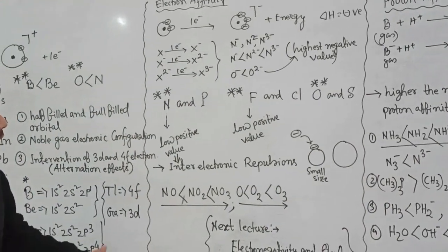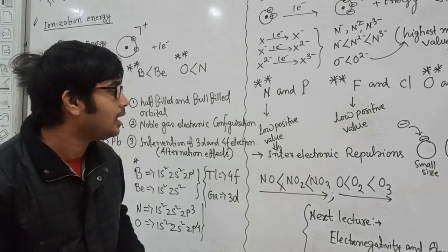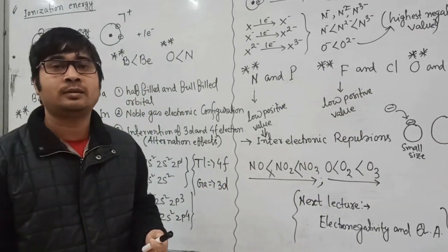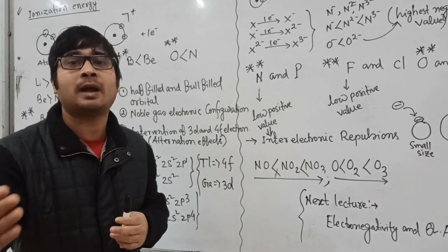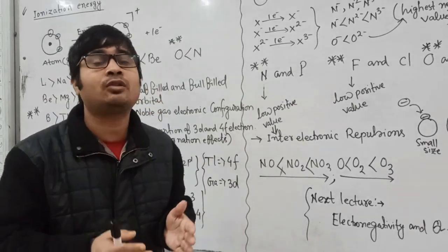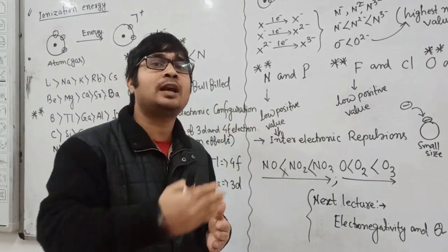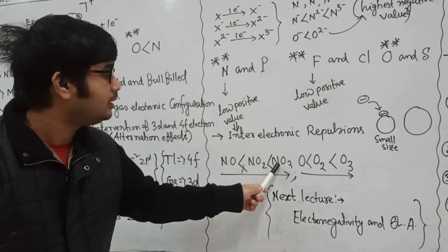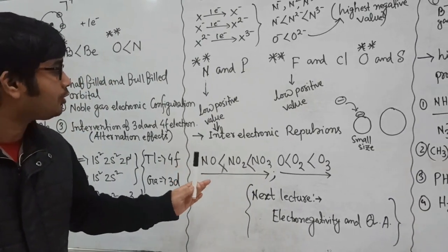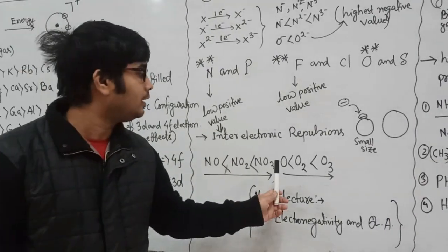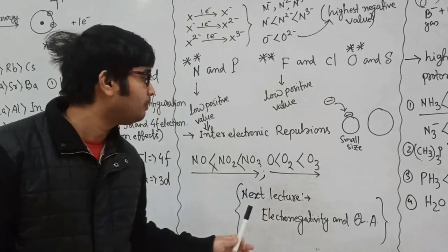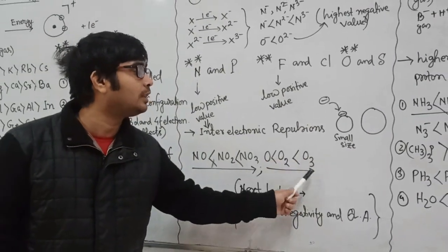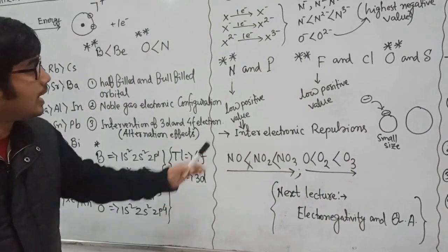How can we explain the trend of electron affinity of molecules like NO, NO₂, and NO₃? You need to remember that the higher the number of electronegative atoms, the higher will be the electron affinity, because it is easier for the molecule to take the electron and stabilize it. Among NO, NO₂, and NO₃, the electron affinity is highest for NO₃. Similarly, comparing oxygen atom, O₂ molecule, and ozone, ozone will have the maximum electron affinity because it has three electronegative oxygen atoms.